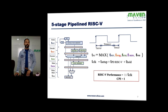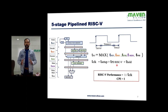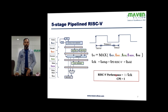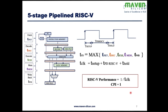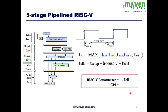For a multi-stage pipeline processor, we consider the maximum delay of one of the stages, not all the delays. That's how we reduce the clock period. If we can reduce the clock period, it improves the clock frequency. For RISC-V, performance in terms of frequency is one divided by T_clock, and we need to maintain CPI as one by filling the pipeline stages to execute things in parallel.